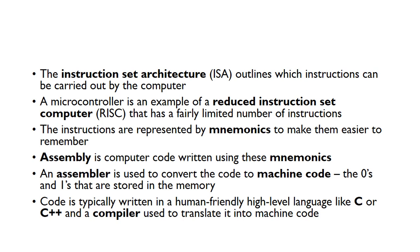Normally computer code is written in a human-friendly high-level language like C or C++. Then we use a compiler that translates the human-readable source code into the ones and zeros that make up the machine code.